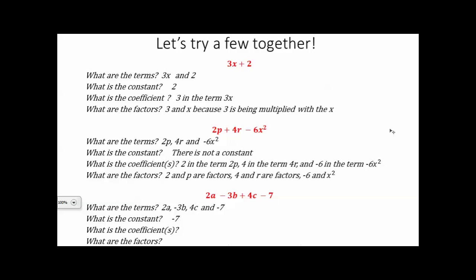Coefficient is when we have a number multiplied by a variable. That number is the coefficient. So notice we have three of those here. We've got the 2, the negative 3, and our 4. And last but not least, we're going to look at our factors. So our factors are 2 times a, negative 3 times b, and 4 times c. Therefore, our factors are 2 and a, negative 3 and b, and 4 and c.